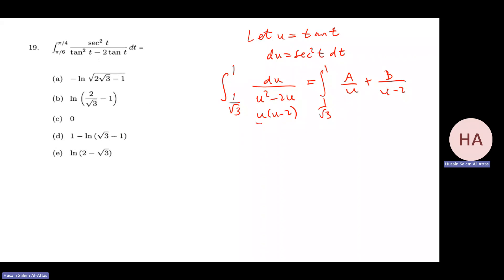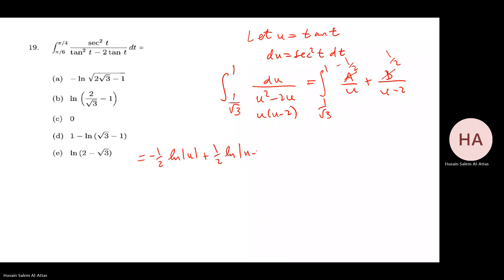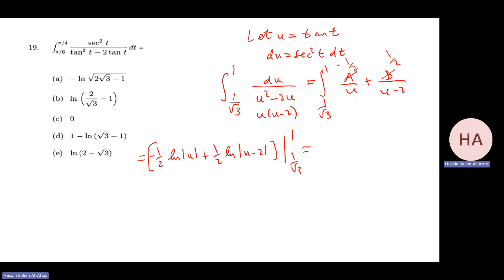So I have the integral from 1 to 1/√3 of A/u + B/(u-2) du. Using the cover method: cover u and substitute 0 to get A = -1/2; cover (u-2) and substitute 2 to get B = 1/2. Substituting u = 1 gives ln(1) = 0 and |1-2| = 1, so ln(1) = 0 — those terms vanish.